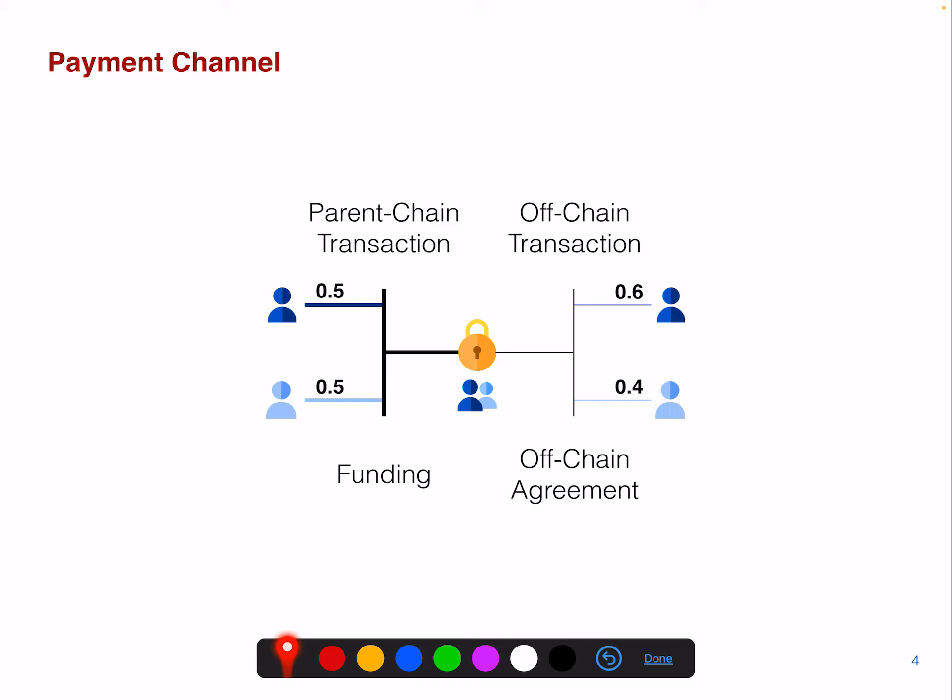In this particular example, this node here funds the payment channel with 0.5 and the other guy as well with 0.5. So this is the funding of this particular channel. And then later, you can have an off-chain agreement and you can shift around the balances. So the shift around of this balance is equivalent to a transfer of 0.1 from this guy to this guy.